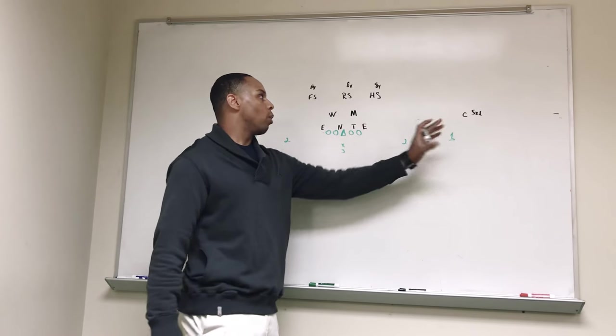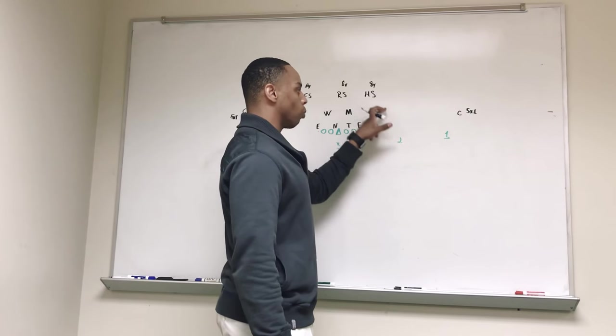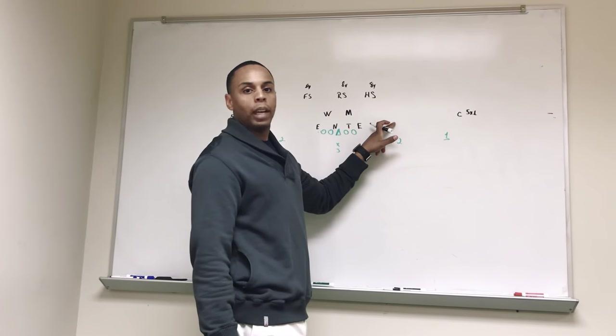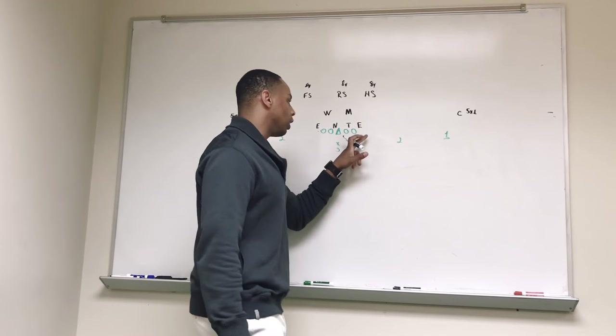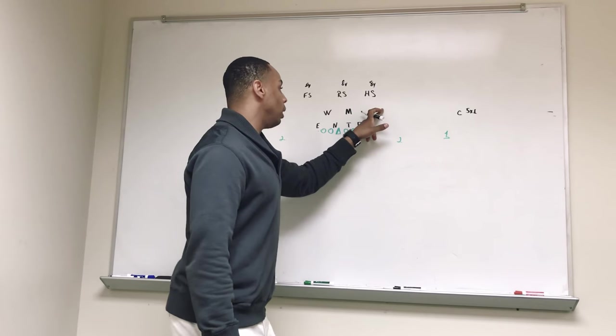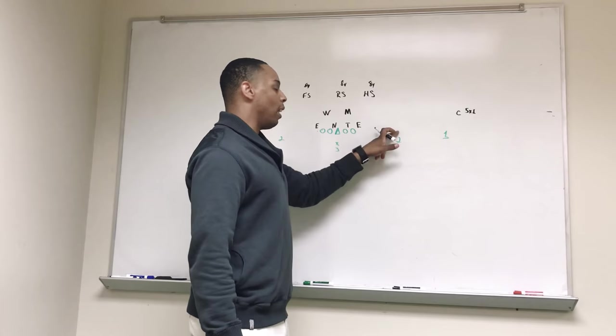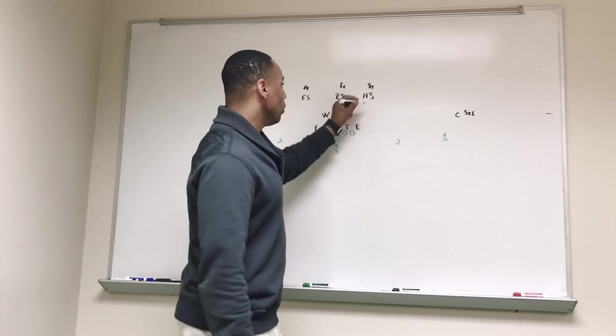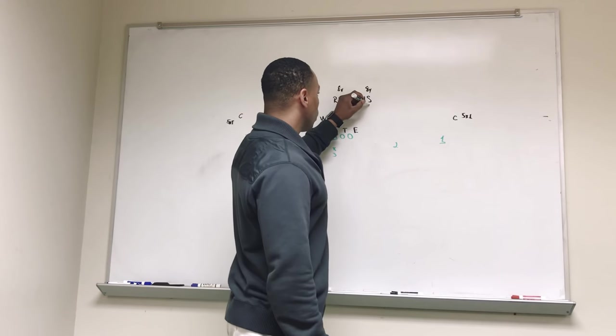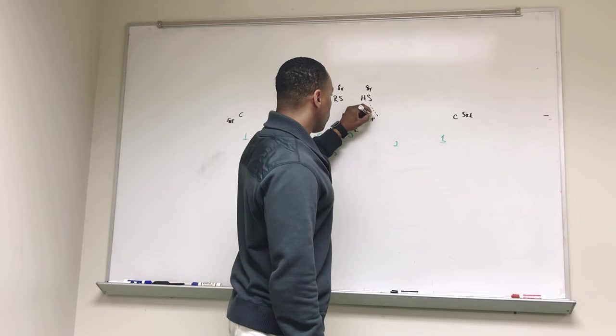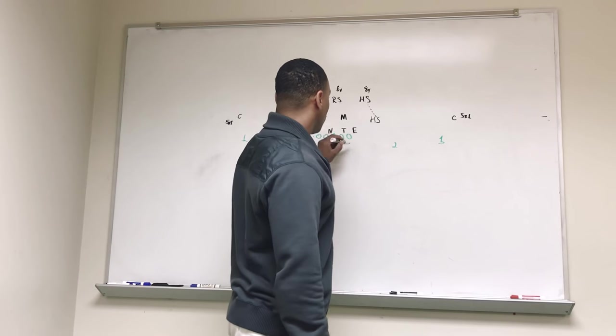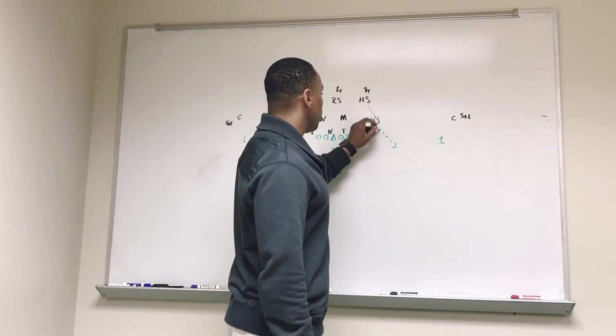We will assume that the field is this way. What we like to do is roll that safety down to what we call an apex position. Our apex position is 5 yards deep and in between the last man on the line of scrimmage and the slot receiver. So we would walk our hawk safety down to 5, and we would be what we refer to as apex.